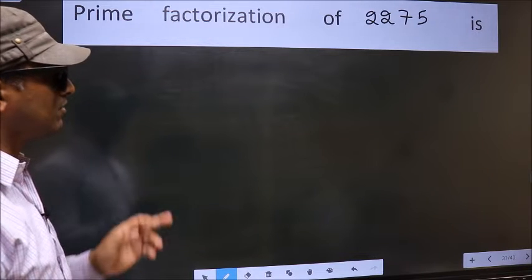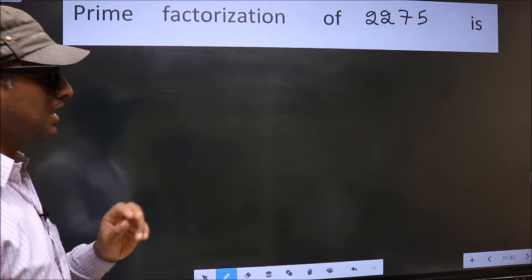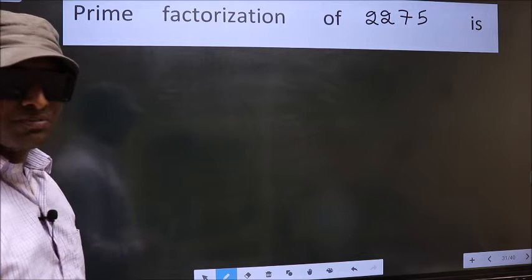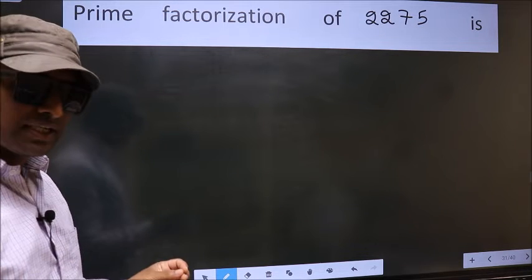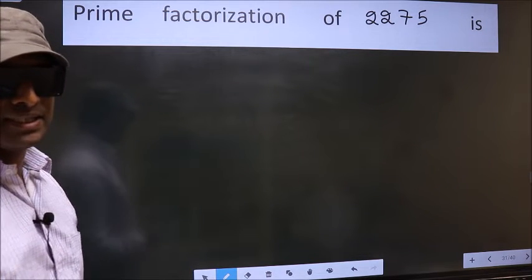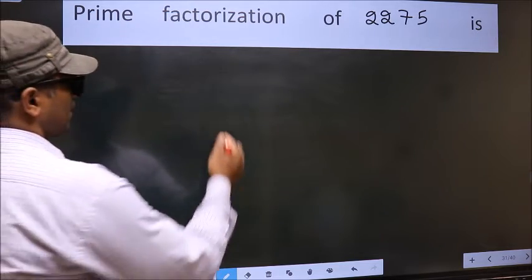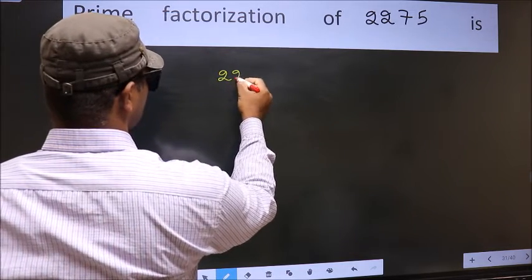Prime Factorization of 2275. To do Prime Factorization, first we should frame it in this way: 2275.